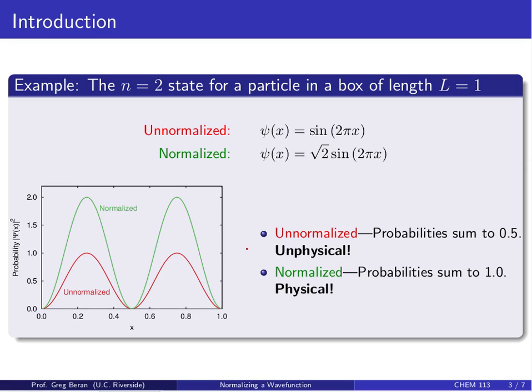In the unnormalized case, that corresponds to having an unphysical distribution, because it's not properly normalized. It would say that there's only a 50% chance of finding the particle somewhere in the box, but we know it has to be a 100% chance. The process of normalizing is just multiplying it by a constant that ensures that when we do that integration over the entire box, we're guaranteed to find the particle with 100% probability.